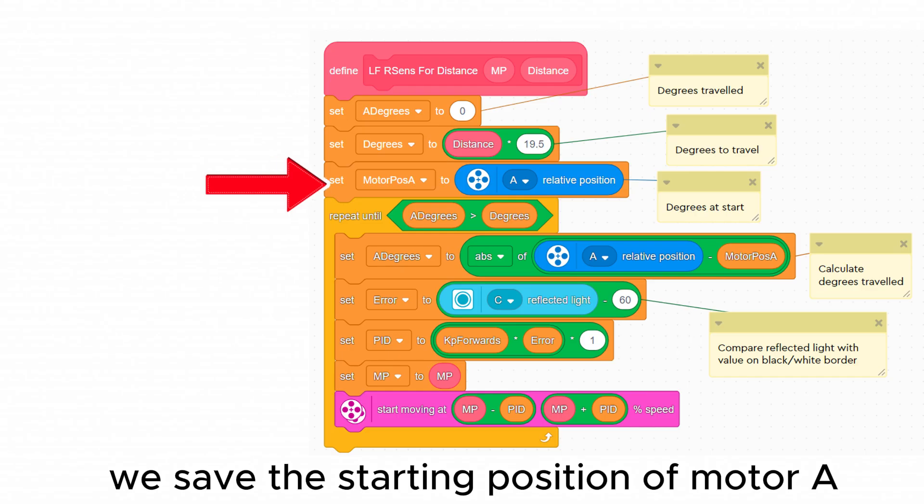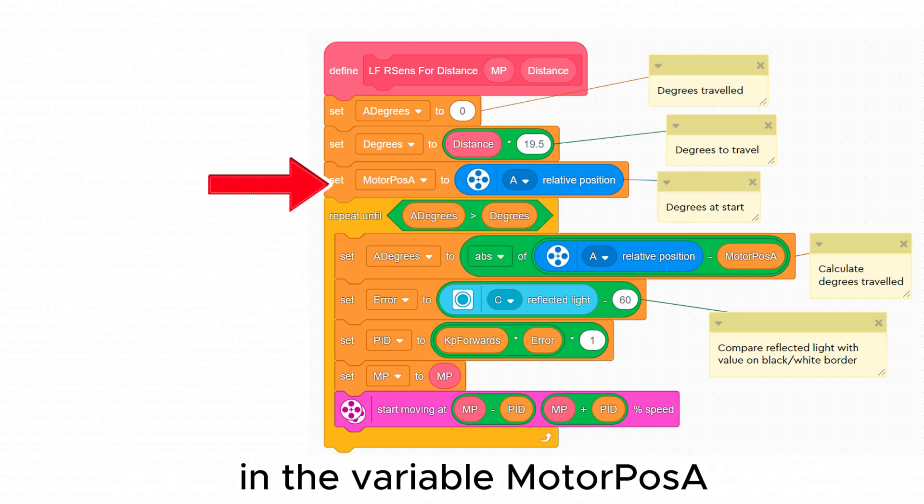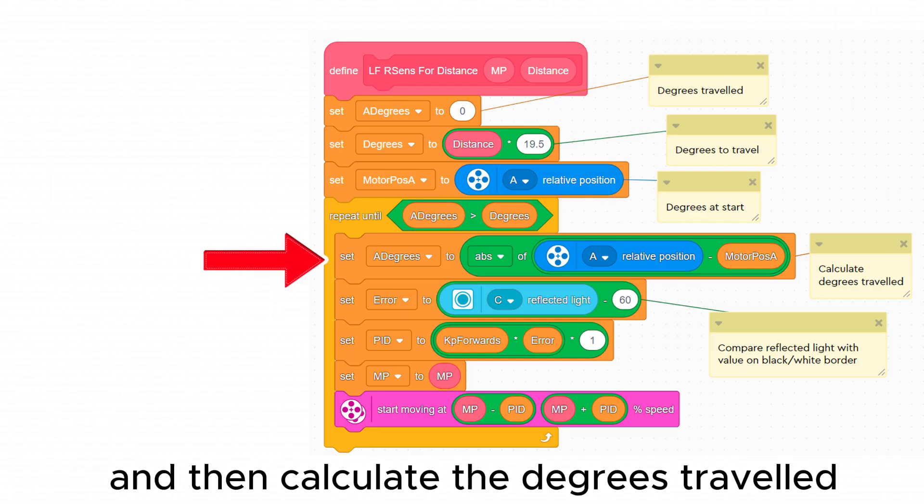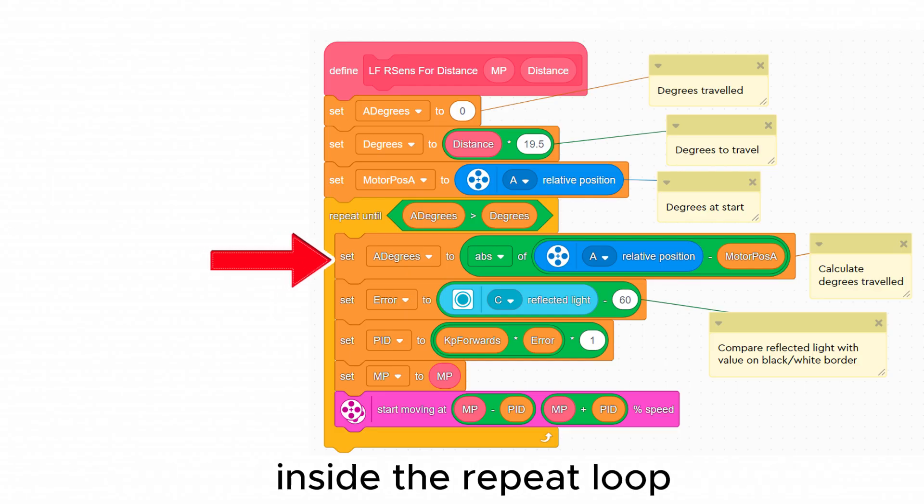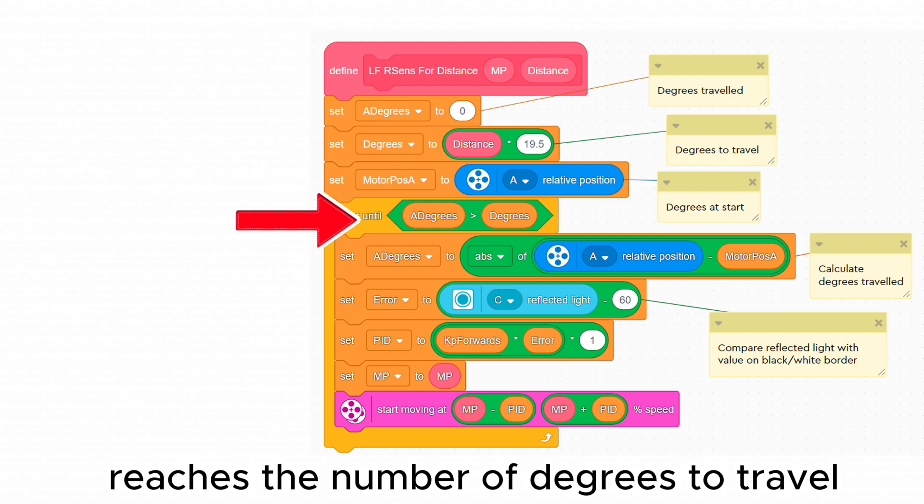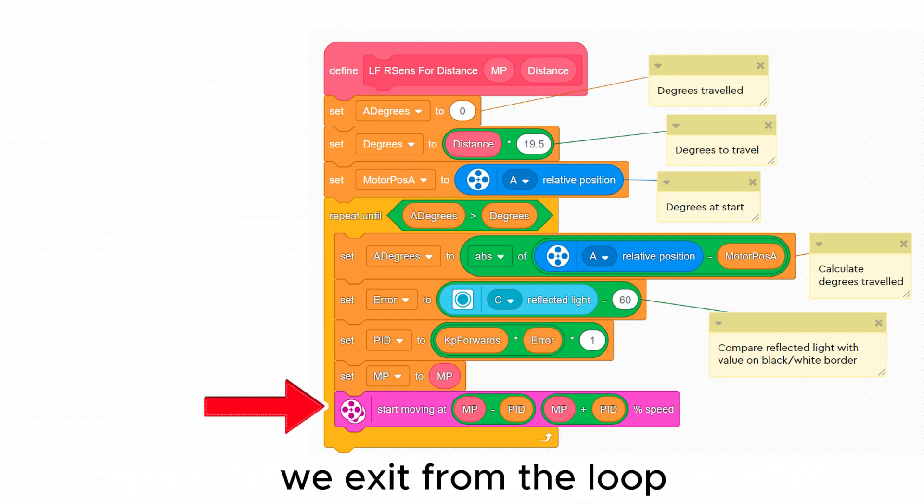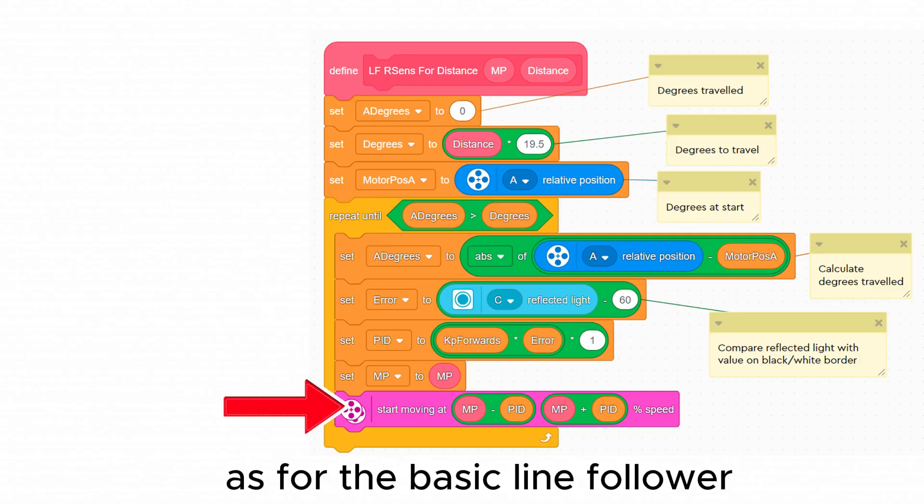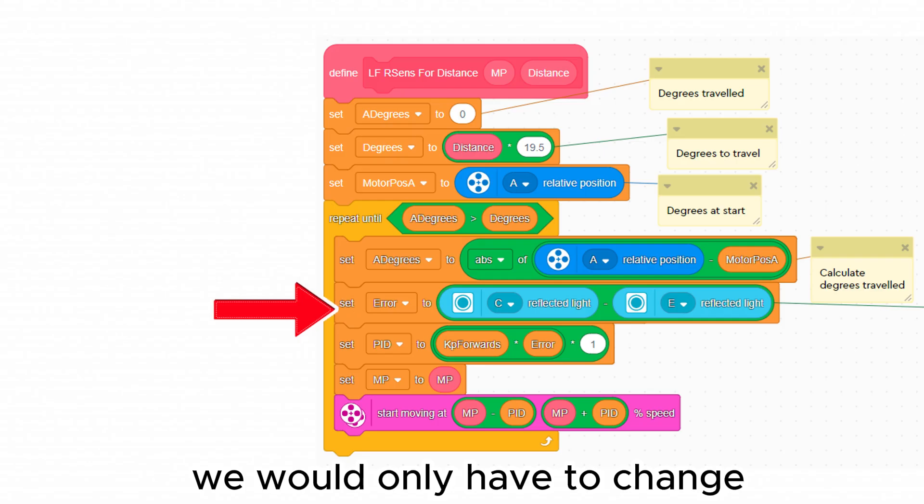We save the starting position of motor A in the variable motor pos A and then calculate the degrees traveled inside the repeat loop. When the degrees traveled reaches the number of degrees to travel we exit from the loop. Inside the loop we follow the line as for the basic line follower. For a two sensor line follower we would only have to change one command in the my block.